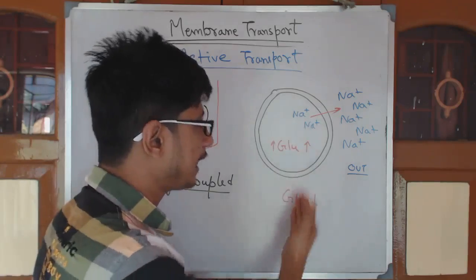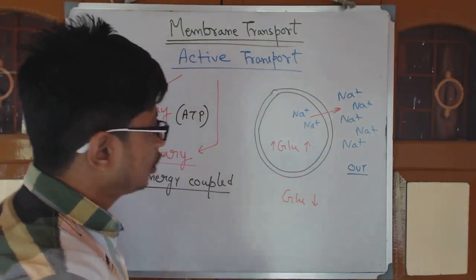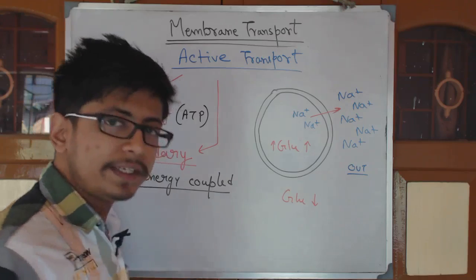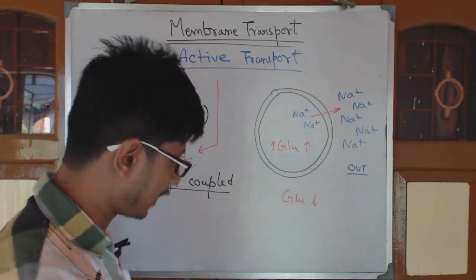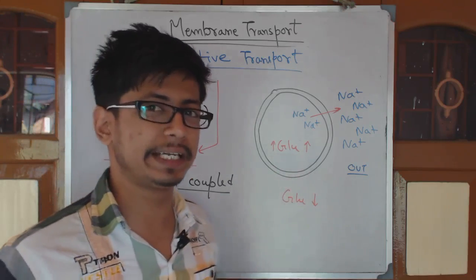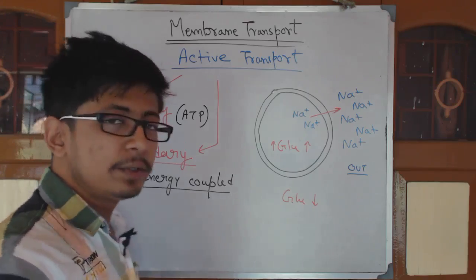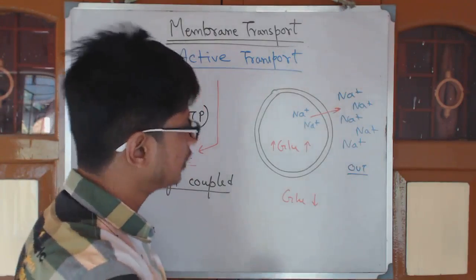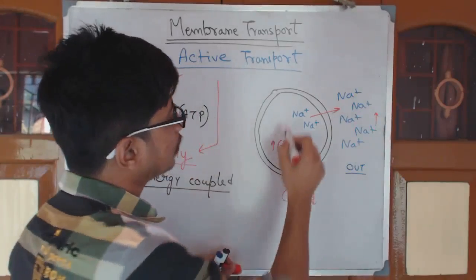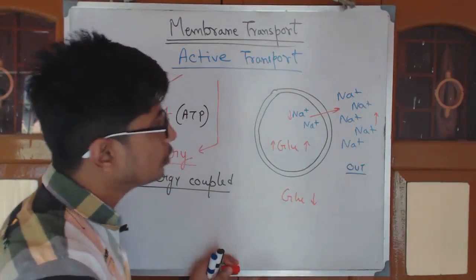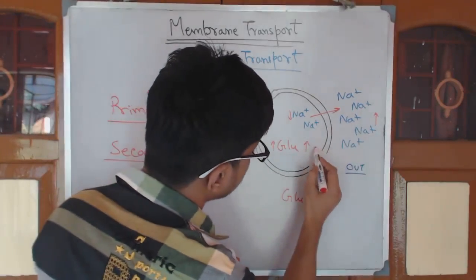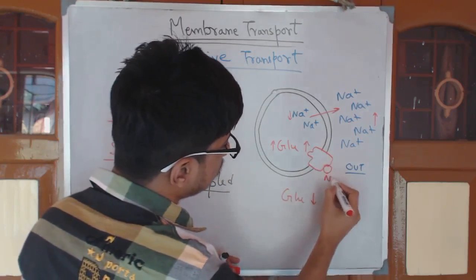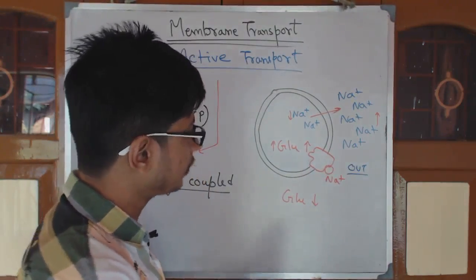So how can the cell take glucose from low to high concentration? Glucose should be moved from outside to inside against the concentration gradient, and obviously a channel protein is required. But in this case, we are not using direct energy. Instead, we are using the concentration of sodium. The sodium concentration built up outside is very high, while the concentration of sodium is very low inside. We have a specific membrane protein which binds to the sodium outside as well as to glucose.